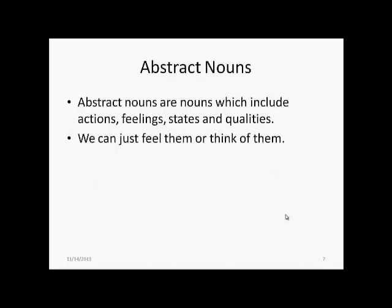Abstract nouns are nouns which include actions, feelings, states, and qualities. As the name itself suggests, these are not tangible things but rather things which are abstract in nature — which cannot be seen, but can only be felt or thought about. So for things like love, hate, fear, anger, and respect, we say these are abstract nouns.